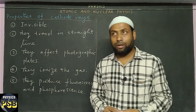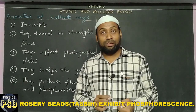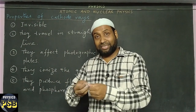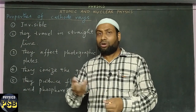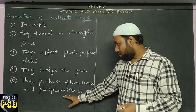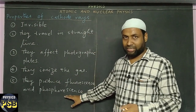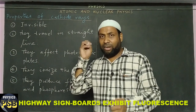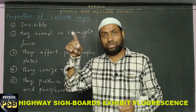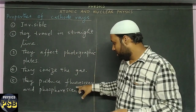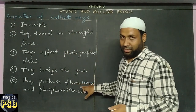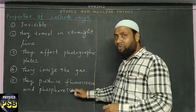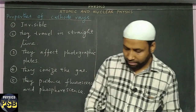For example, rosary beads — when brought to a dark room, they start glowing and emitting light. This phenomenon is called phosphorescence. In highways you might have observed that when light falls on sign boards, they glow — that's due to fluorescence. When cathode rays fall on certain substances, fluorescence as well as phosphorescence occur.